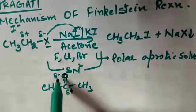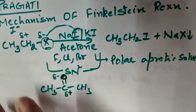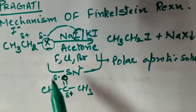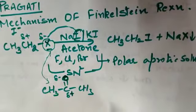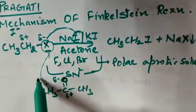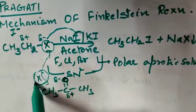So basically kya hota hai ki SN2 mechanism ke duran, ye X, jab nikal raha hota hai, transition state se, X is the leaving group, this will come in contact with this acetone. Ab acetone ka ye delta negative charge, is X ko repel karega.